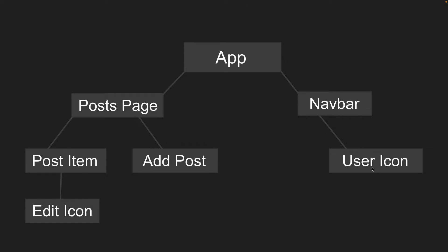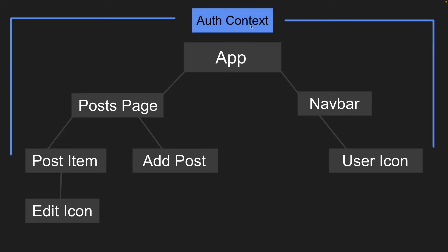These three components all need access to the user state. We could pass that user through the nav bar to the icon, and from the app to the post page down to the post item — but as your app grows, you'd have to keep passing that state through components and it becomes very hard to follow. Instead, we could create an auth context at the top and wrap our entire app with it, so all child components can tap into it, get the state, and even update it.